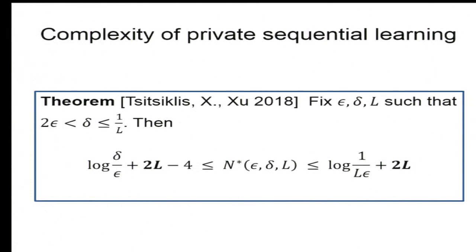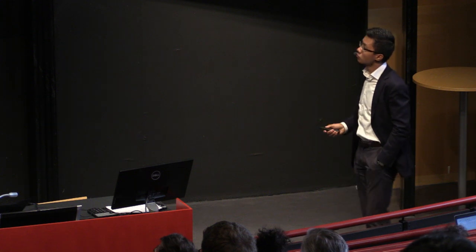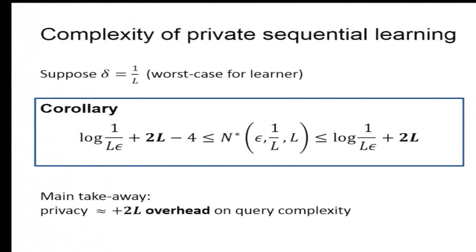So that's our main result, the following complexity bound. In that regime, we see that this complexity is upper-lower bounded by these two quantities. And the one I want to highlight is the 2L. Essentially you see a log factor here, which you would expect, but in both cases, you see a 2L increment in the complexity. To make it more clear, let's look at the case where delta, which is the adversary's error, is the worst case for the learner. So it's equal to 1 over L. In that case, the bound simplifies and becomes essentially tight if you ignore the minus 4 factor. So here the complexity says you need to do some kind of bisection search, which you probably would have done anyway. But in addition, you put in 2L more questions. Therefore, the take-home message here is that, roughly speaking, privacy implies an additive 2L overhead on query complexity.